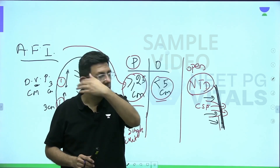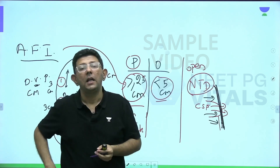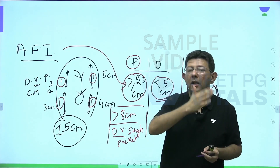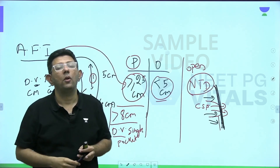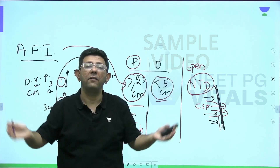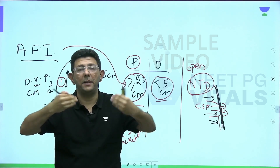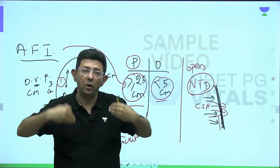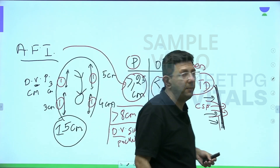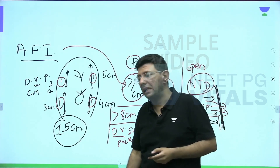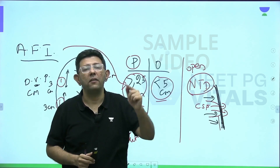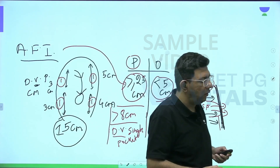Diabetes is a very famous cause — we'll discuss that in the diabetes class. Twin-to-twin transfusion syndrome also causes polyhydramnios in one twin and oligohydramnios in the other. Hydrops fetalis — 'water everywhere' — means fluid in the pericardium, pleural space, and ascites inside the baby, and also more liquor outside. Immune hydrops is from Rh isoimmunization; non-immune hydrops has many causes. Choriangioma is a very rare chorionic villus blood vessel tumor that also causes polyhydramnios.